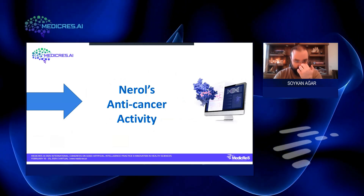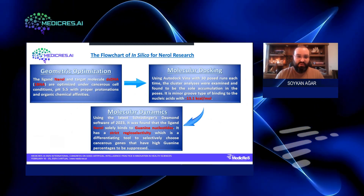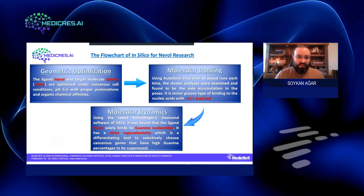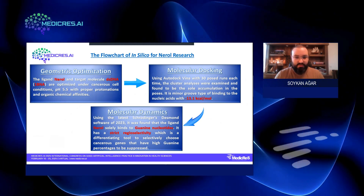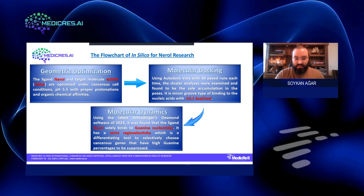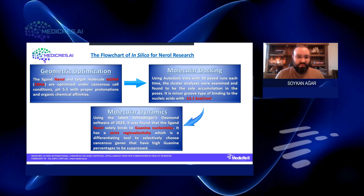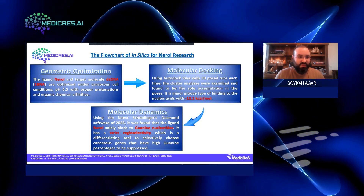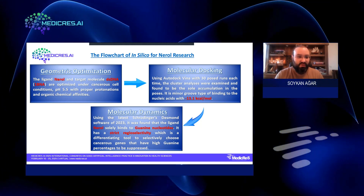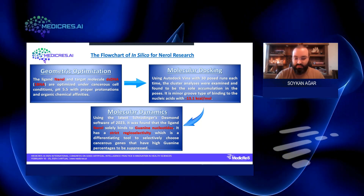To discuss the results for Nerol and its anti-cancer activity, our study had three main areas: the initial part was geometric optimization, followed by molecular docking, and finally molecular dynamics. In geometric optimization, the ligand Nerol and the target receptor — the dsDNA 1BNA structure — were optimized under cancerous cell conditions at pH 5.5, reflecting the nucleus pH of cancerous cells, with proper protonations and organic chemical affinities.